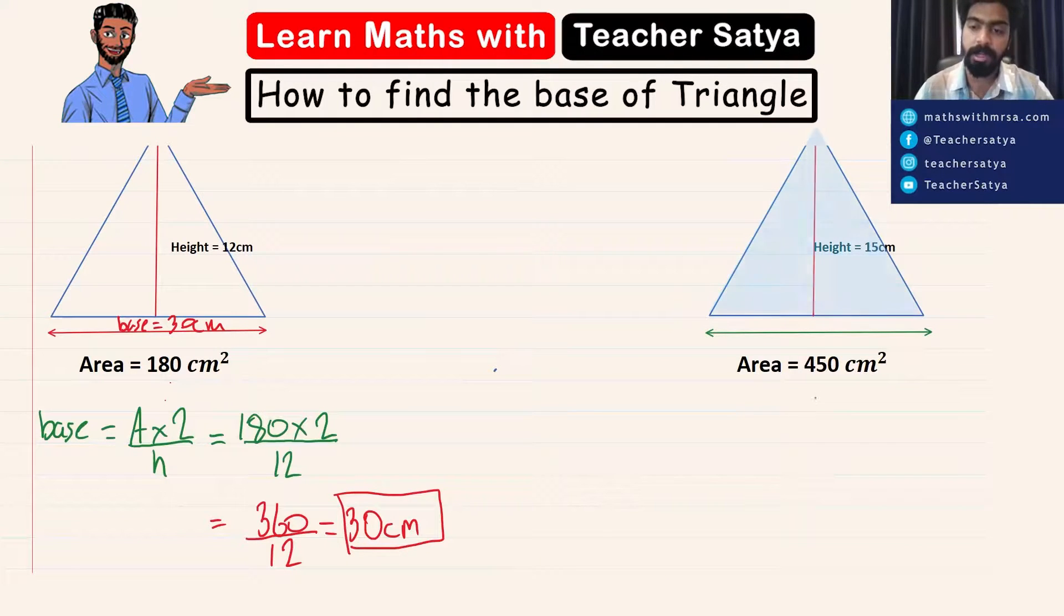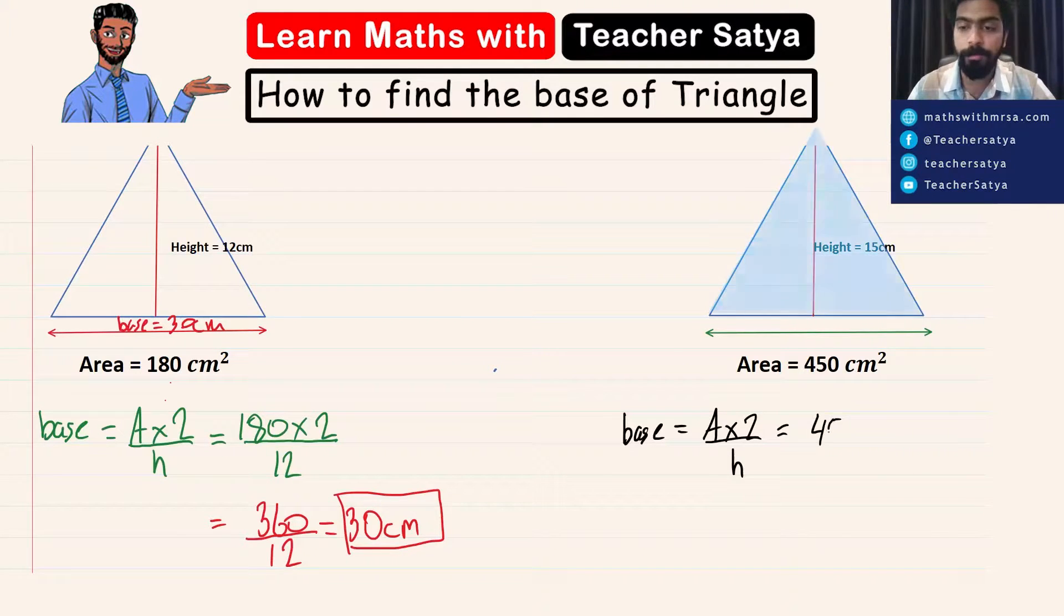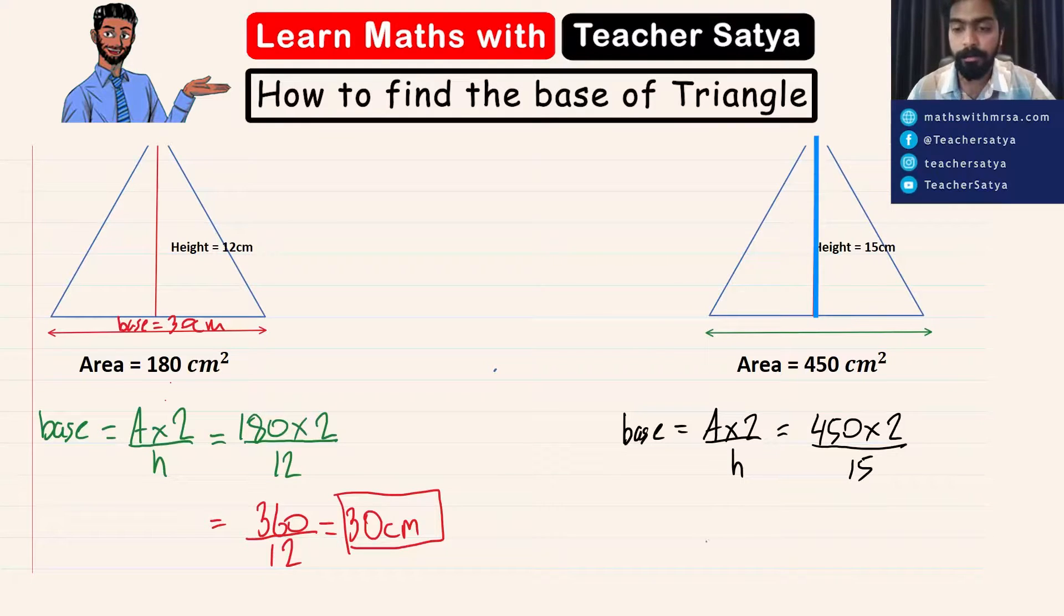We know the area is 450 square centimeters and the height is 15 centimeters. Let's start by writing the formula down. The base is equal to A times 2 divided by the height. So we have 450 multiplied by 2 divided by its height which equals 15.